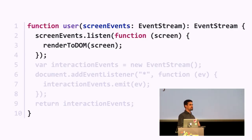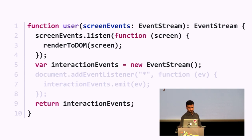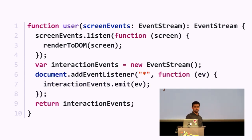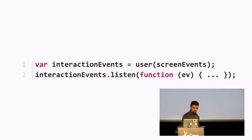In JavaScript it would look like this. We start with the given screen event stream and listen to each screen event and render it to the DOM. Then we create a plain empty event stream called interaction events, which we return at the bottom. We listen to all possible events happening on the DOM — this star doesn't actually exist, it's just to illustrate. Whatever we listen to, we forward to interaction events. The user function is written.